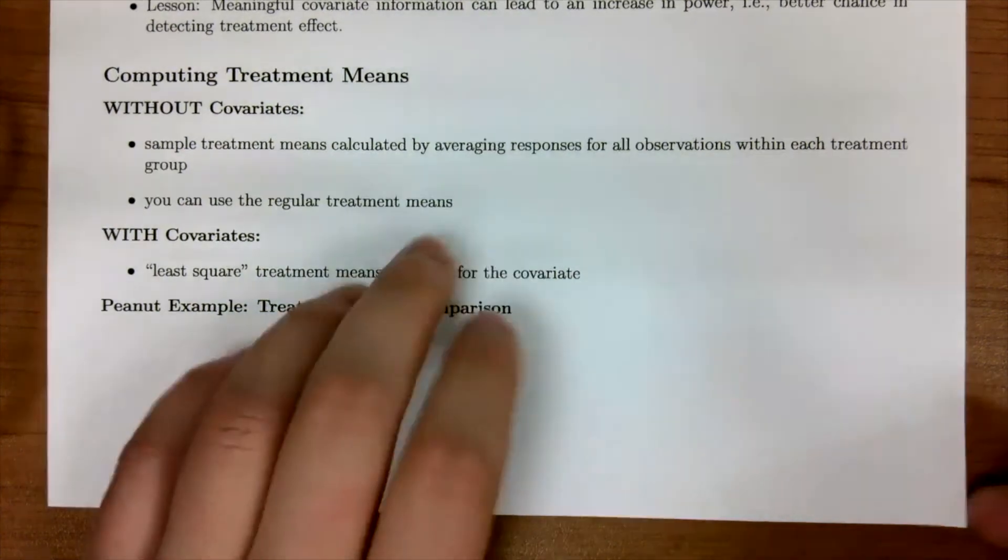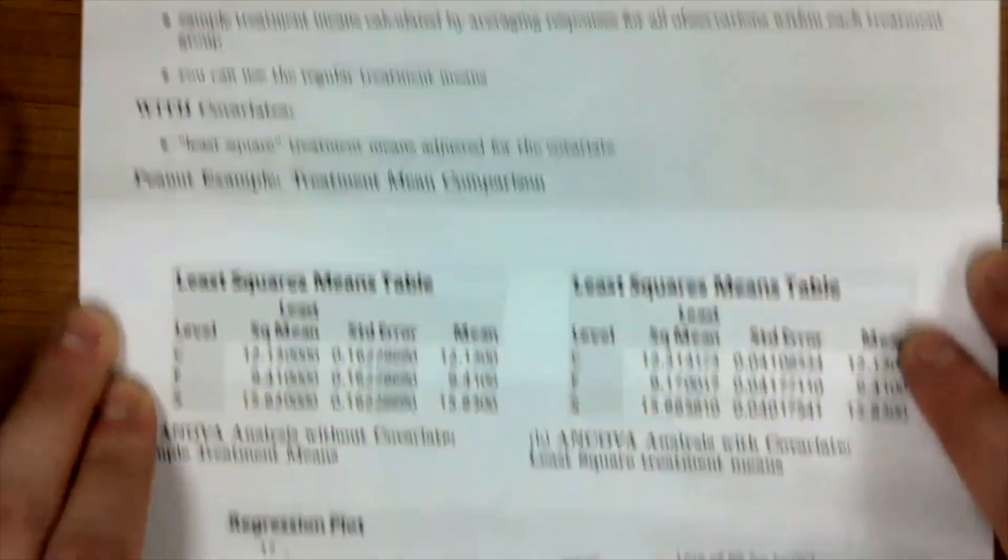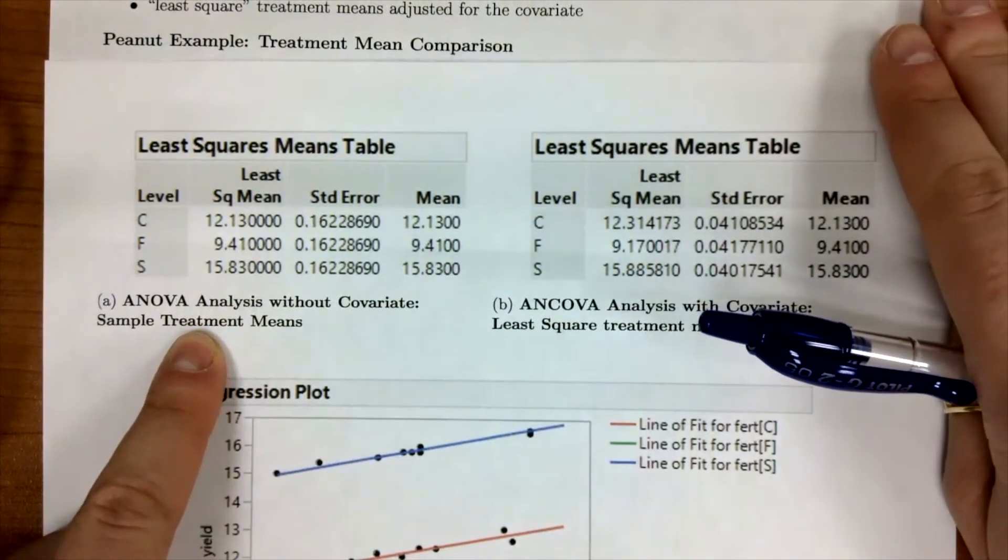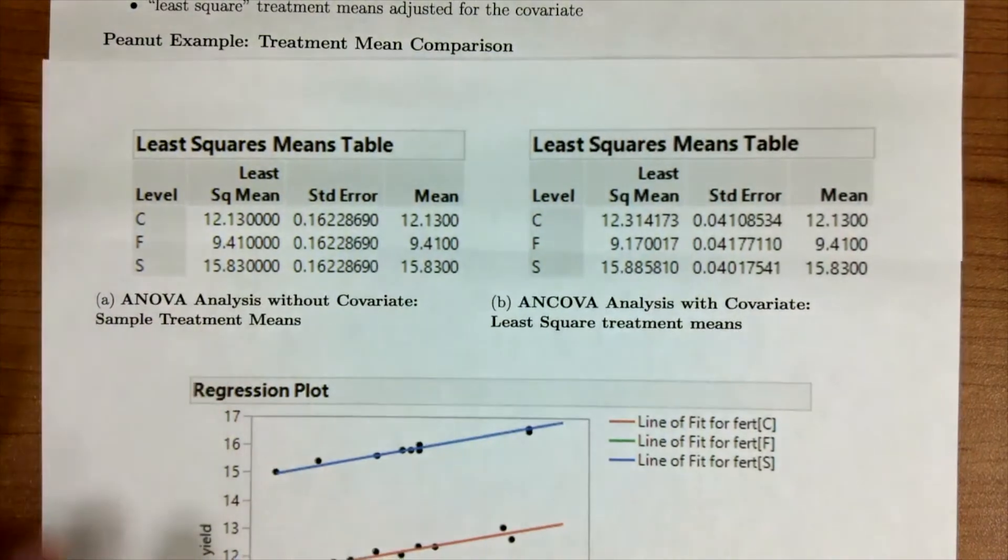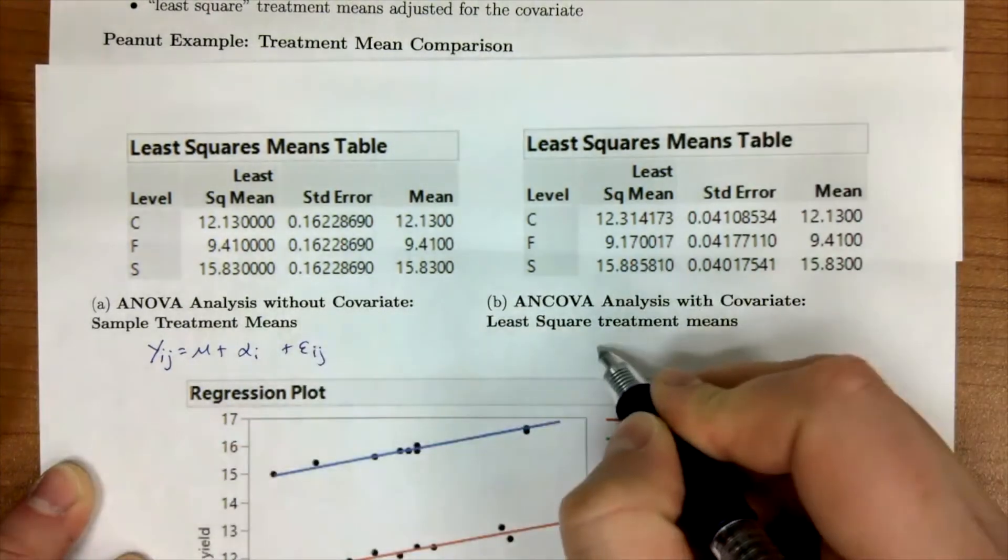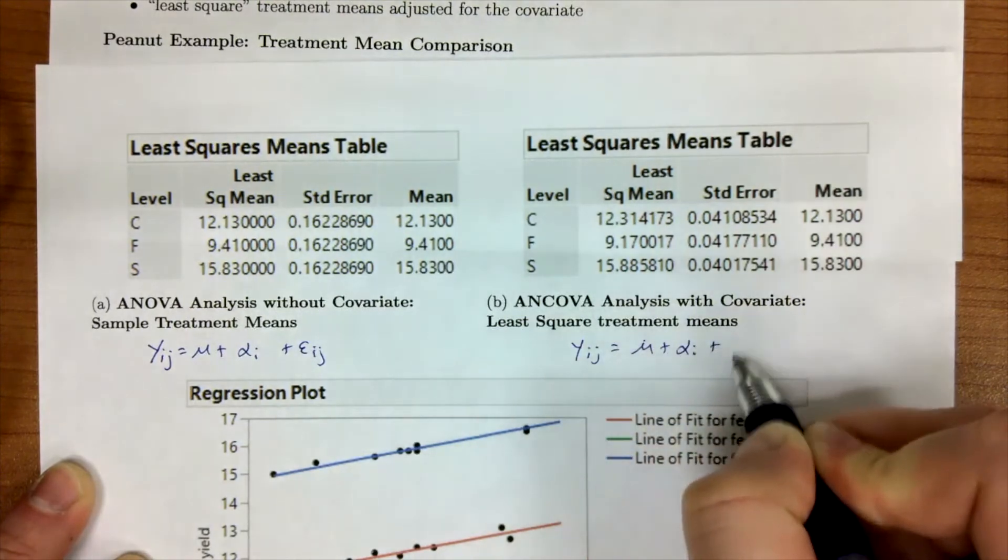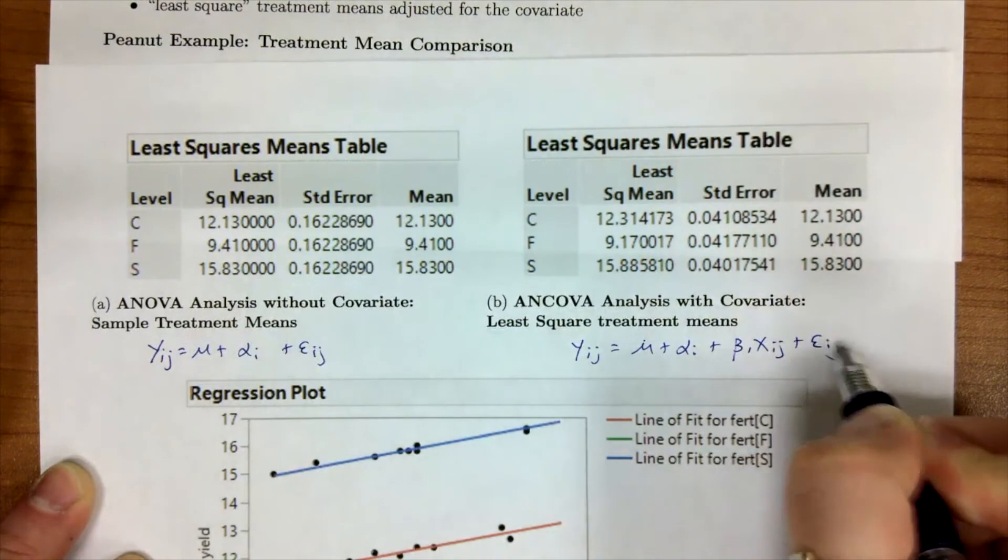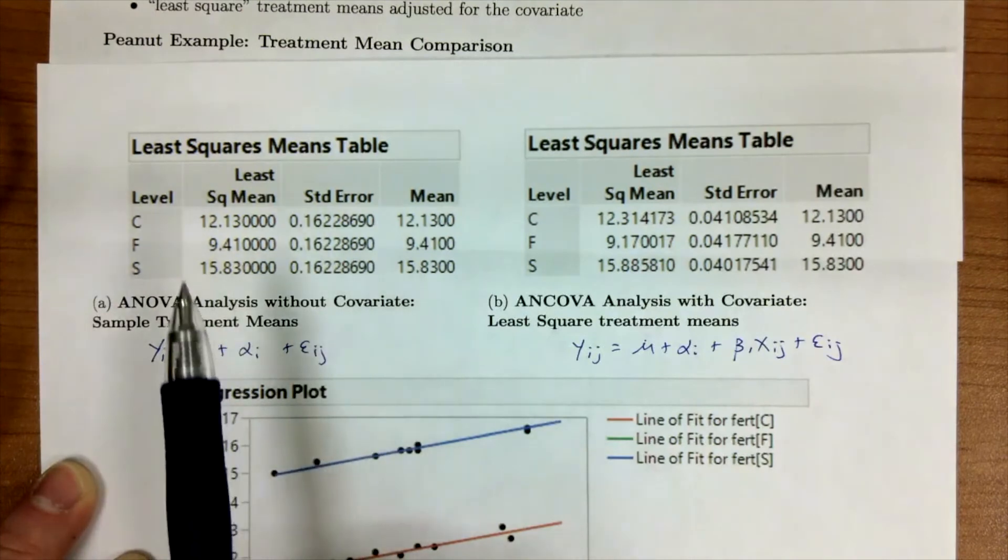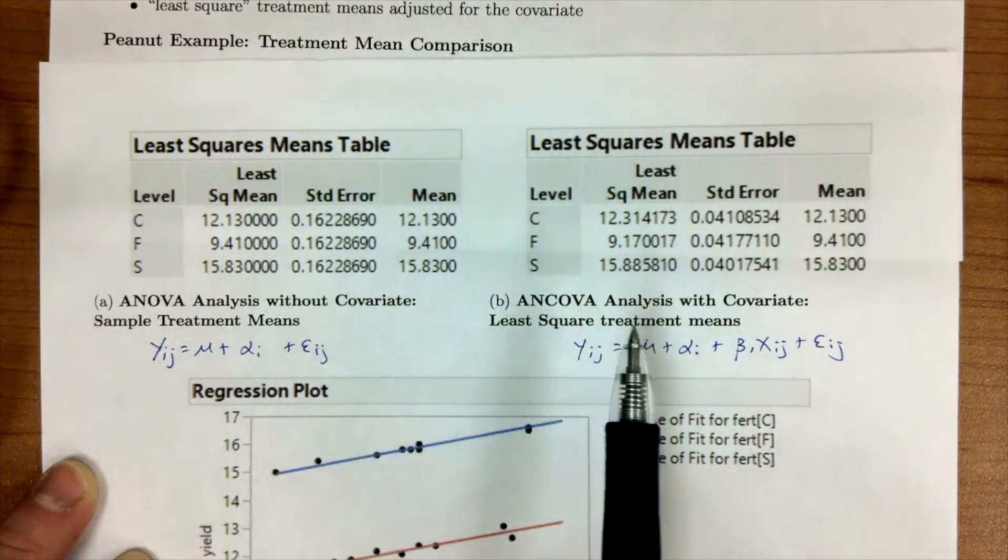In JMP, you'll get a nice table right here, and I like it because I can compare. On our left hand side, this is our ANOVA without our covariates. This is the yij equal to mu plus alpha i plus our error term. Then on our right is with our covariate. Notice that in our ANOVA without the covariate, our least squares mean and our regular mean are the same. When we come over here to our ANCOVA analysis, we can notice that they're slightly off.